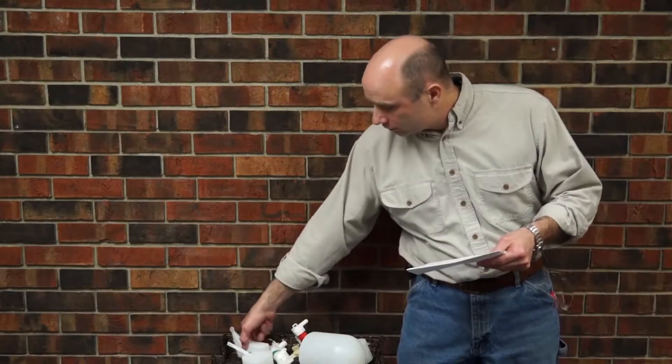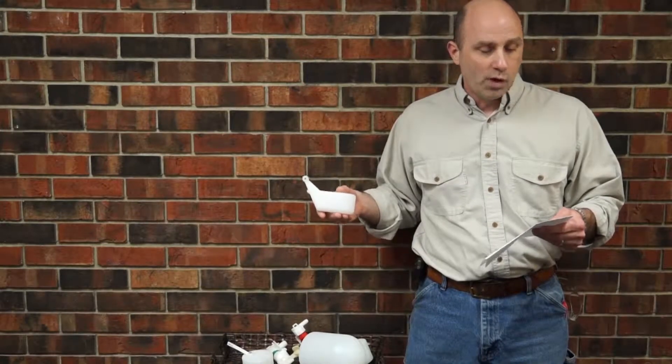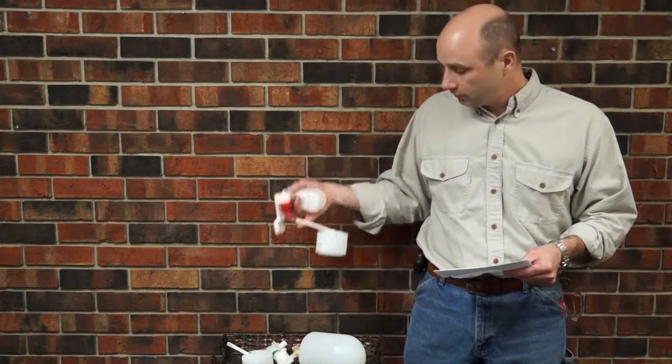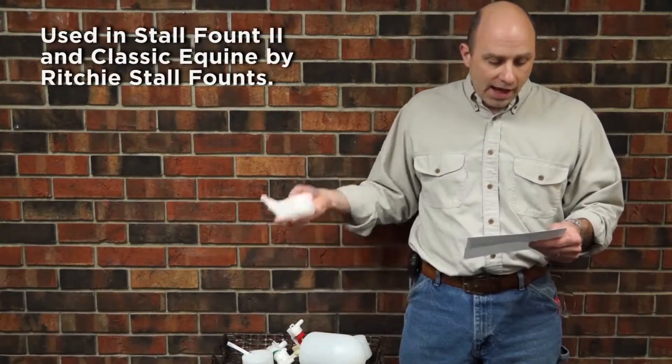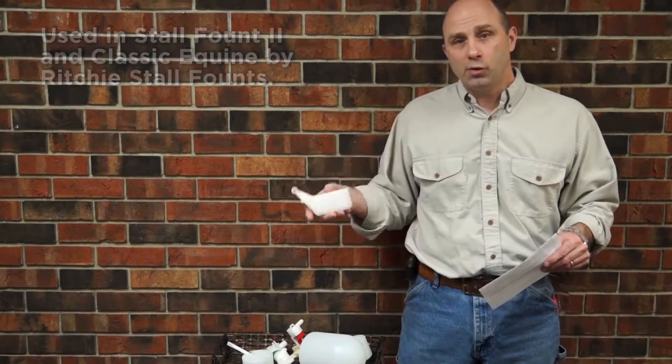And we have one more float. Part number on this one is a 18642. And this is for the half-inch valve. Goes onto that valve assembly. And this is going to be used in your Stall Fount 2's and the Classic Equine Stall Fount.